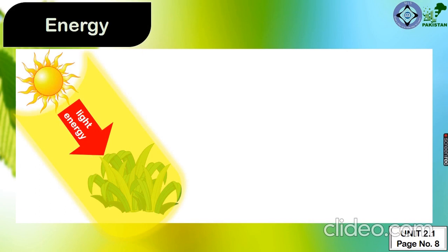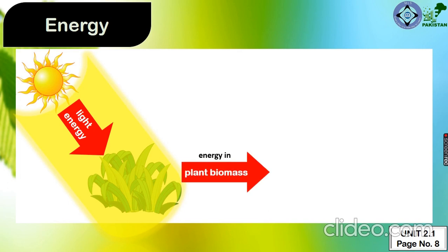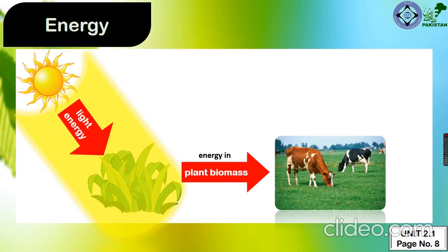We studied in the previous lecture that the more energy plants get from the sun, the more they photosynthesize. And the more they photosynthesize, the more their biomass increases. So then they feed many of us, allowing us to get food and take energy.